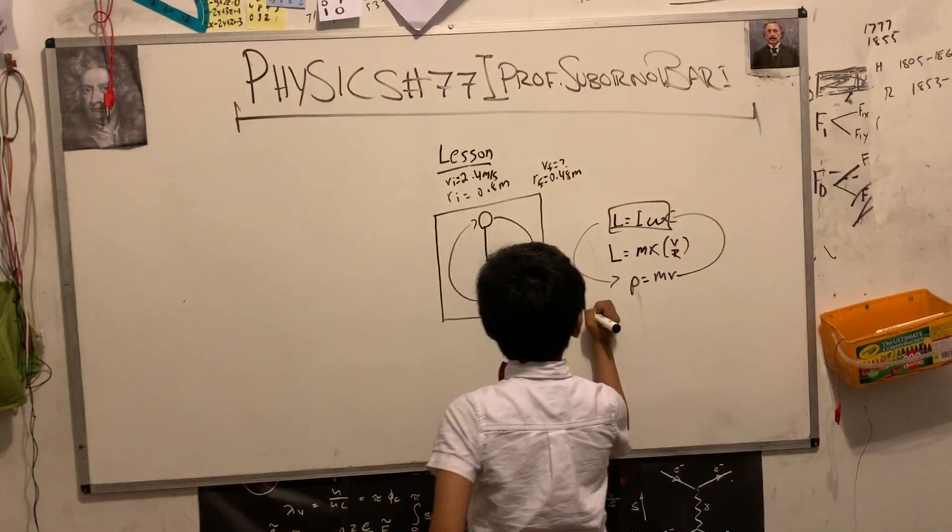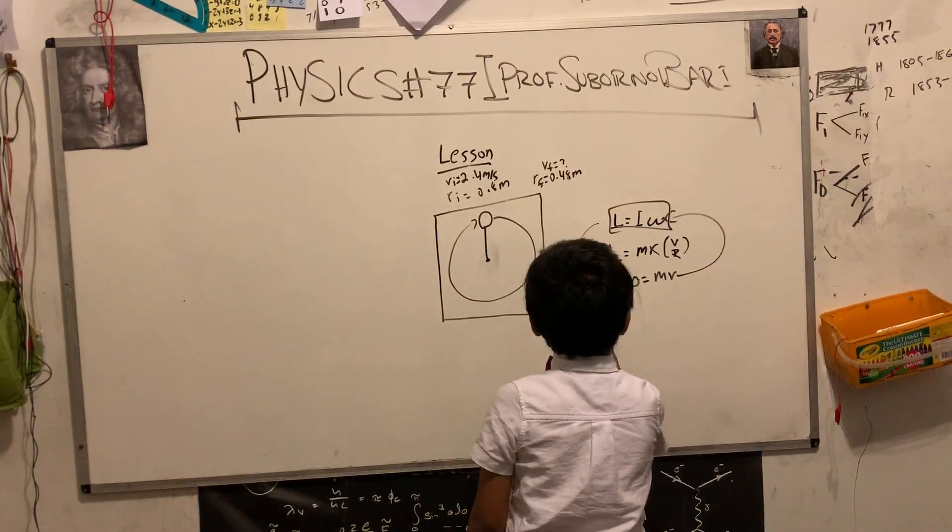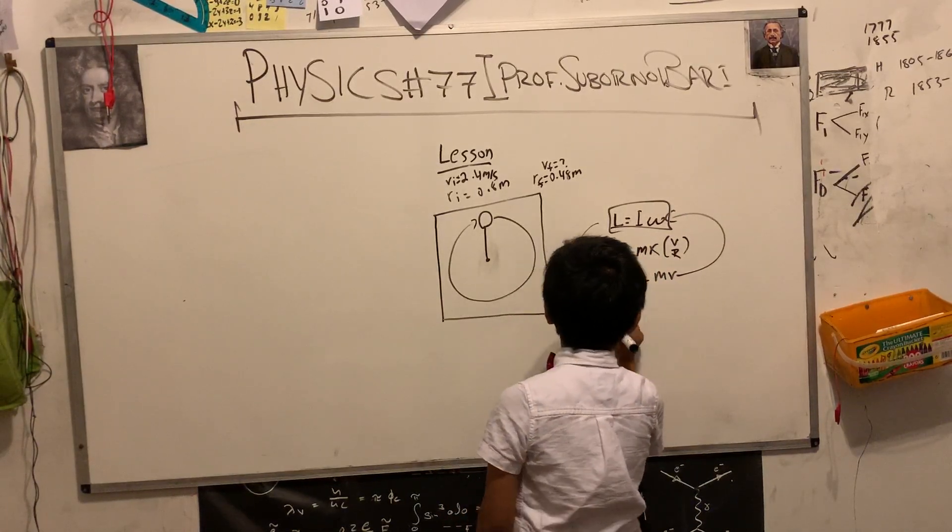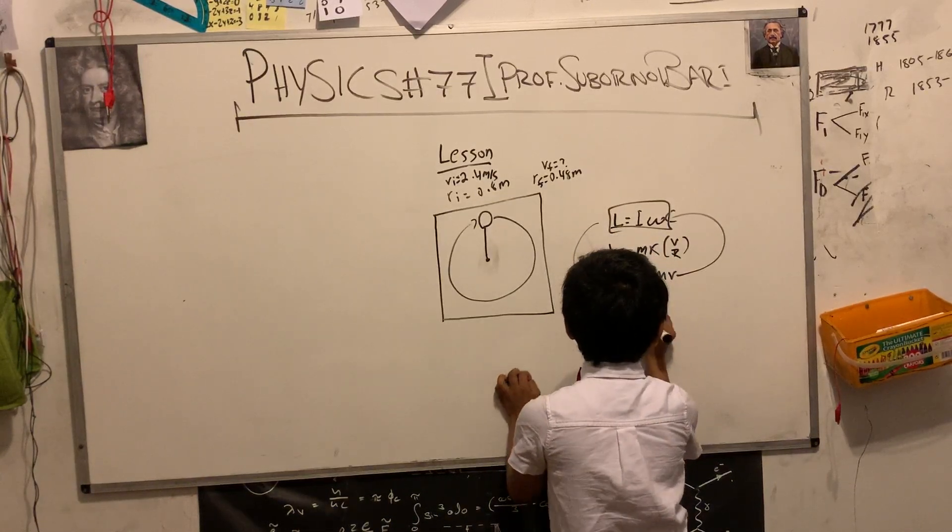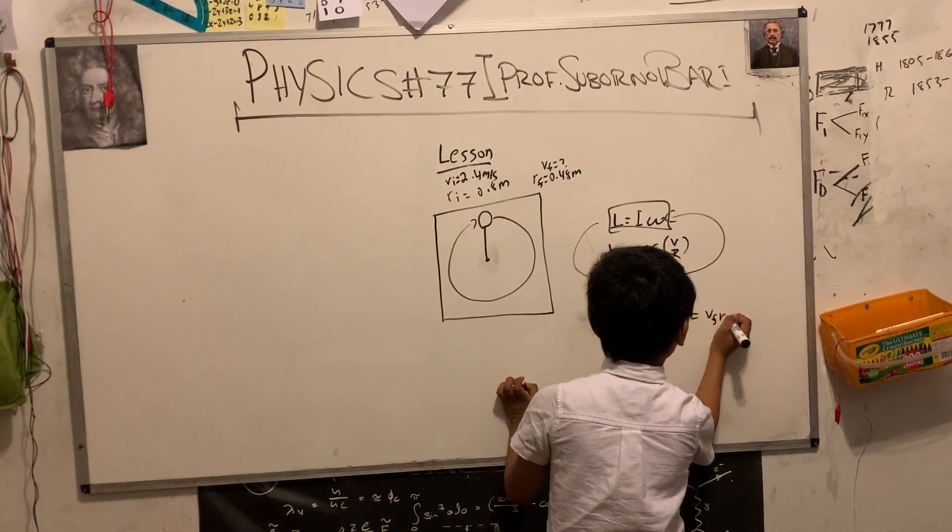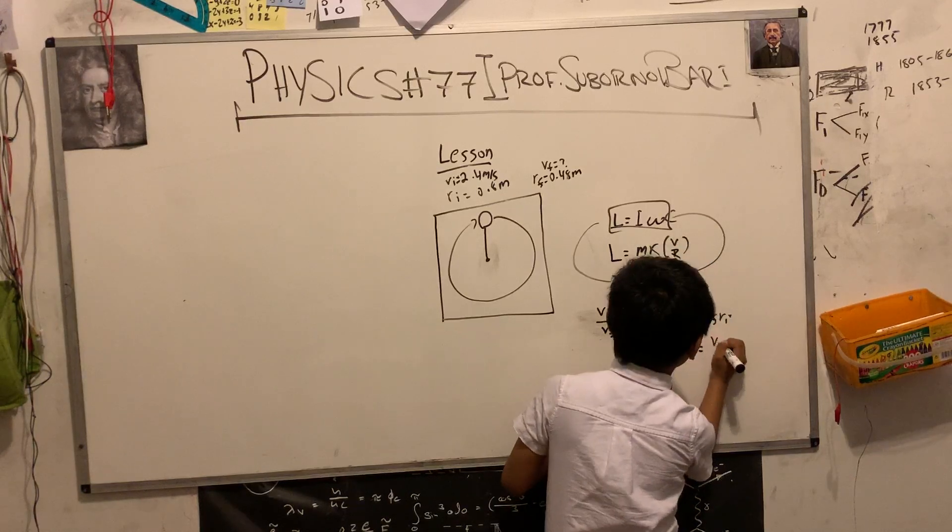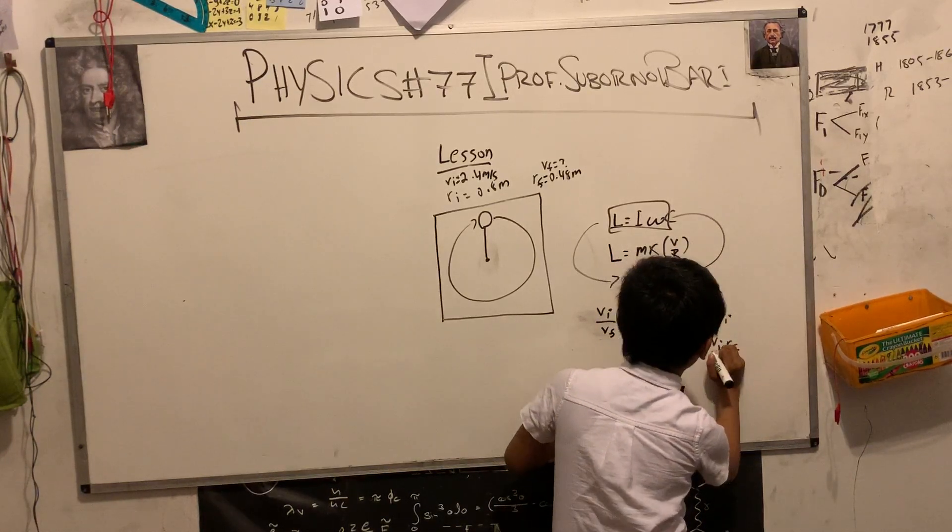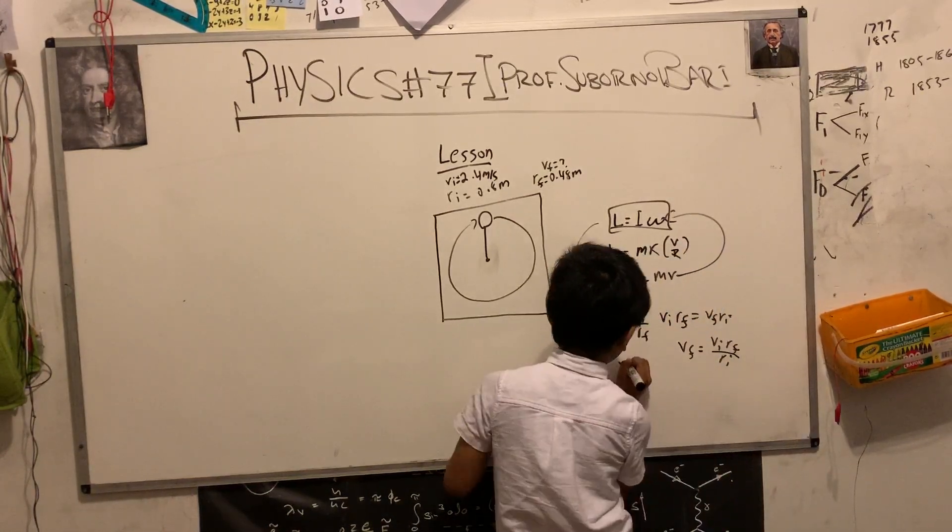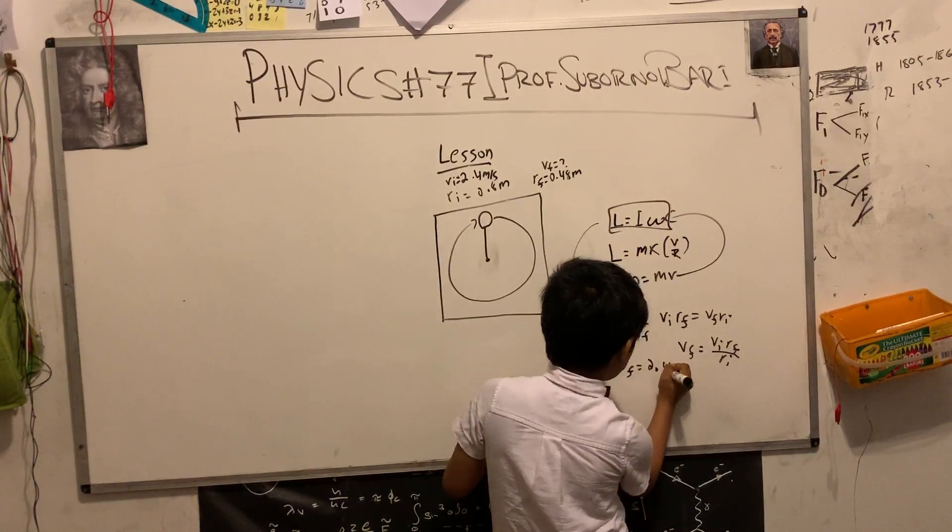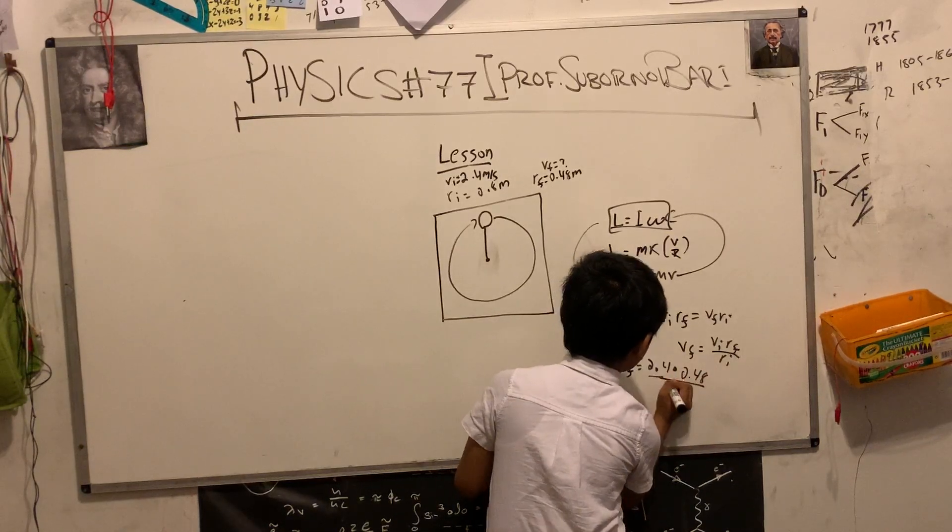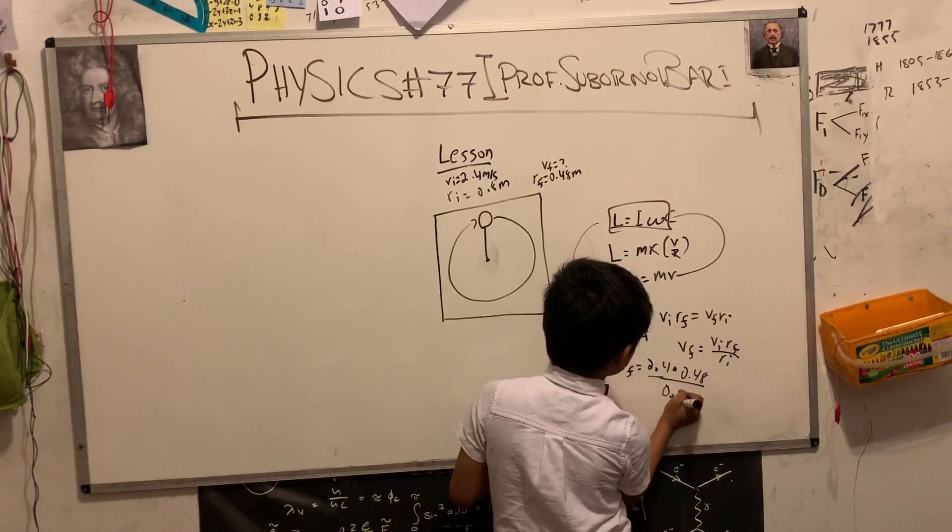Now, this is just a valid proportion. V initial over V final equals to R initial over R final. V final is equal to V initial times R initial over R final. That's going to be 2.4 times 0.8 over 0.48.